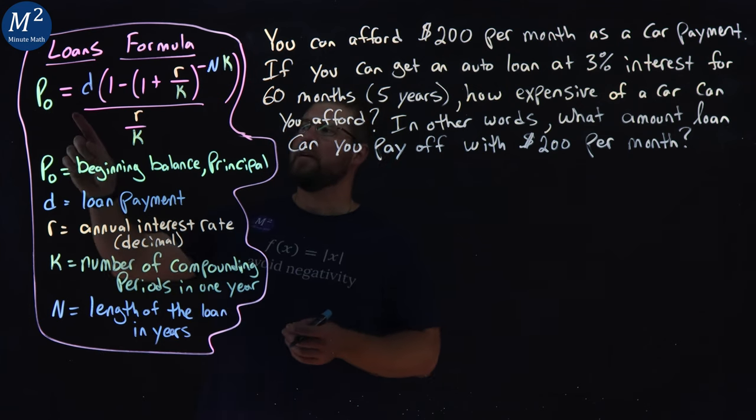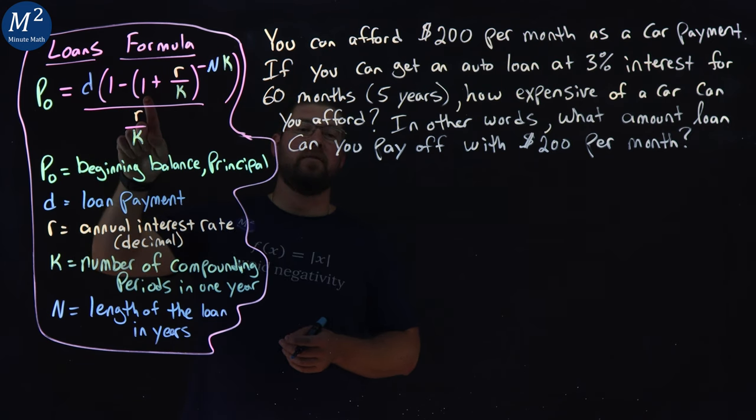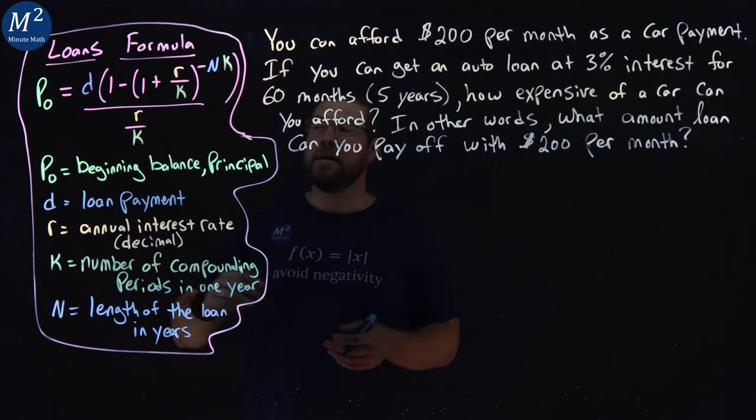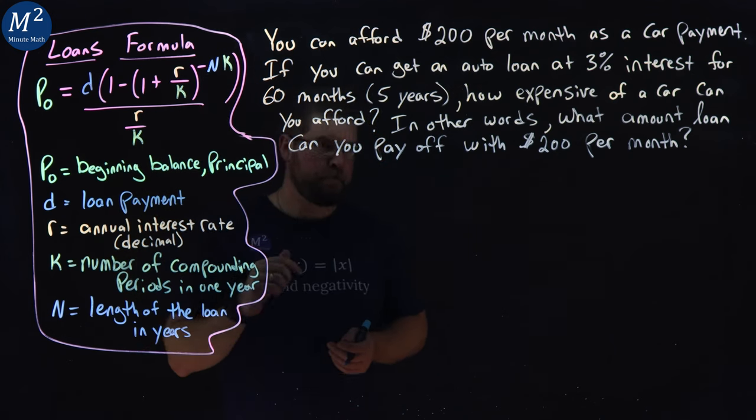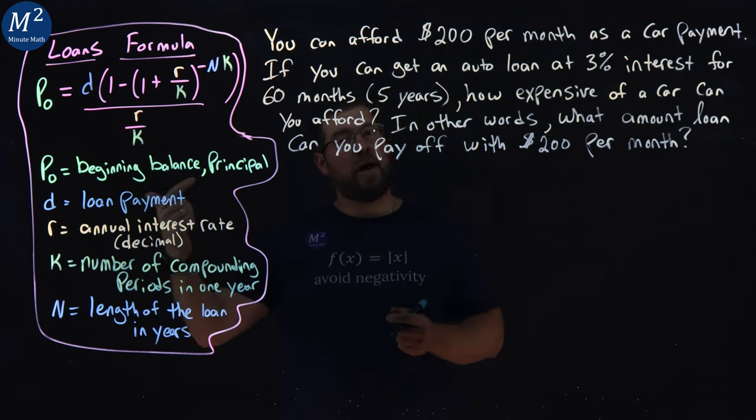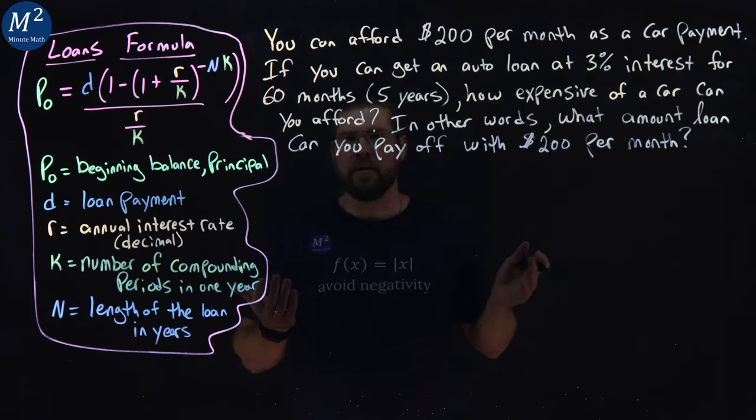Our formula is P sub O equals D times 1 minus in parentheses 1 plus R over K to the negative NK power divided by R over K. So what I like to do is find each one of these values here and label them out and then put into our formula.